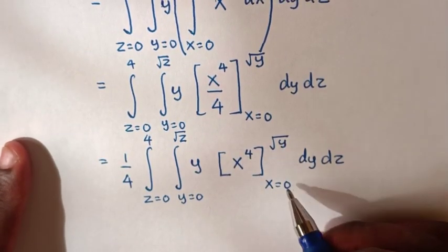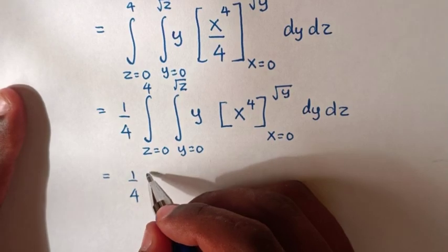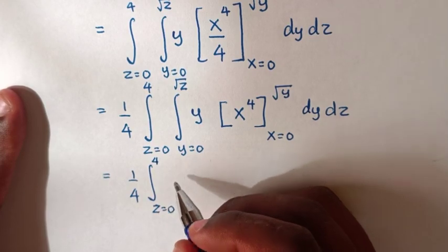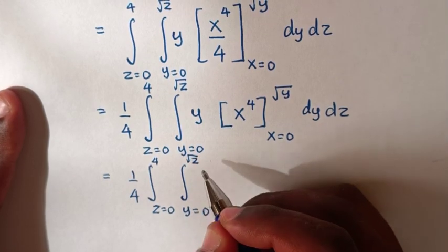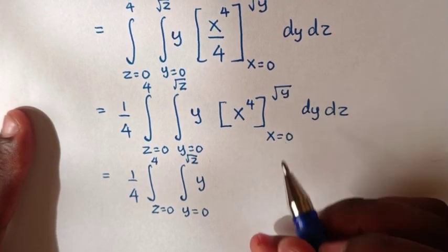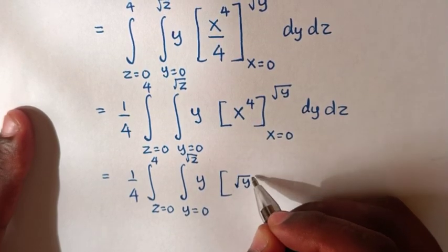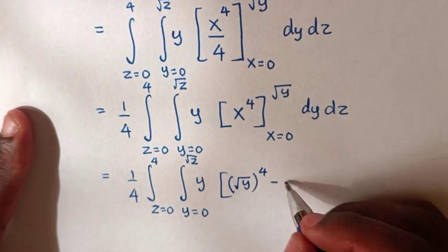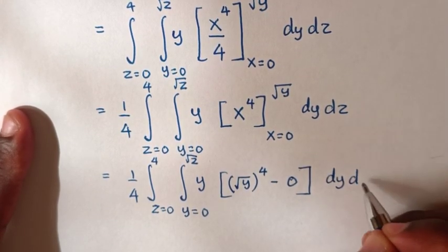Next step, we substitute these limits. So it will be equal to 1 over 4, integral from z equals 0 up to 4, then integral from y equals 0 up to square root of z — y — then here x equals square root of y, so we substitute square root of y into x. So it will be (square root of y)⁴ minus, substituting x equals 0, it will be 0⁴ which is 0, bracket dy dz.